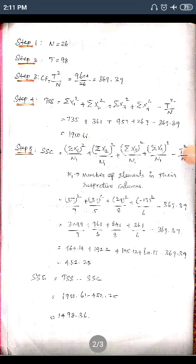Step 1: The total number of data points N = 26. Step 2: The grand total T = 98. Step 3: The correction factor CF = T² / N. Substituting the values, CF = 98² / 26 = 369.39.